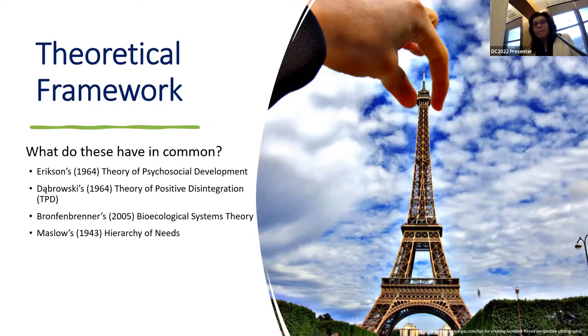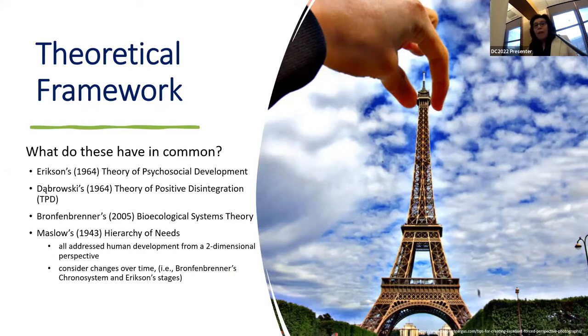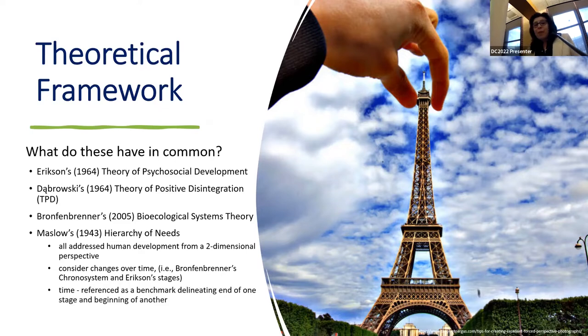Humans are multifaceted, and with the plethora of theories, there's no one single model that can accurately explain their development, although Dabrowski's theory comes the closest to explaining developmental potential. We need a new perspective to critically synthesize concepts of time, cartography, and spatial modeling. Between Erickson, Dabrowski, Bronfenbrenner, and Maslow, all of these address human development, but from a two-dimensional perspective. Some of them consider changes over time, like Bronfenbrenner's chronosystem and Erickson's stages. The issue here is that time is referenced as a benchmark. So let's step back for a larger view to see context beyond levels and time.